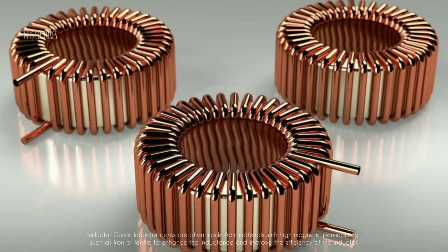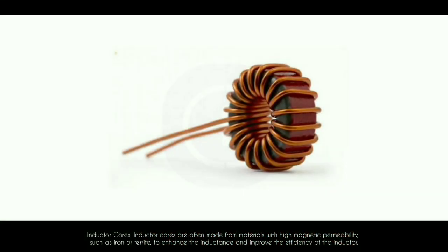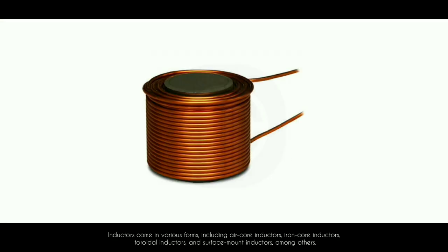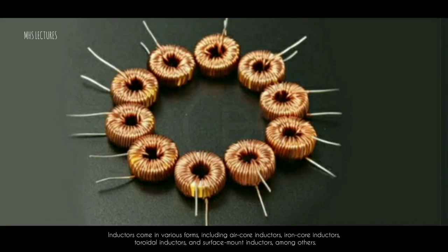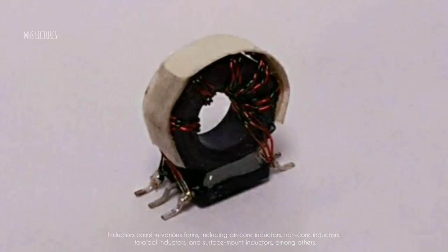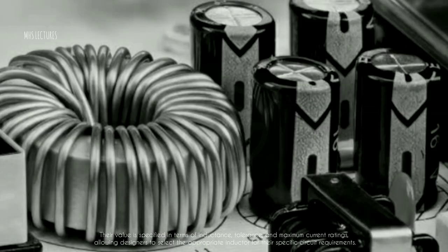6. Inductor cores — inductor cores are often made from materials with high magnetic permeability, such as iron or ferrite, to enhance the inductance and improve efficiency. Inductors come in various forms, including air core inductors, iron core inductors, toroidal inductors, and surface mount inductors. Their value is specified in terms of inductance, tolerance, and maximum current ratings, allowing designers to select the appropriate inductor for their specific circuit requirements.